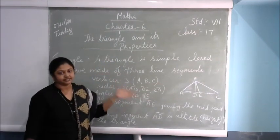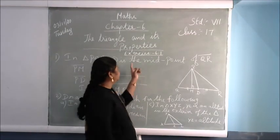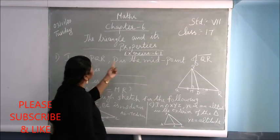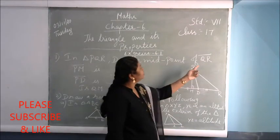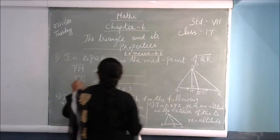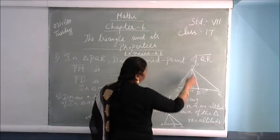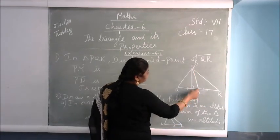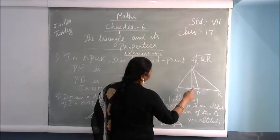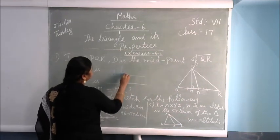Now we will see Exercise 6.1. In triangle PQR, D is the midpoint of QR. So D is the midpoint of QR. They are asking: what is PM? Since D is the midpoint, that means PM is your median. And PM is also the altitude.